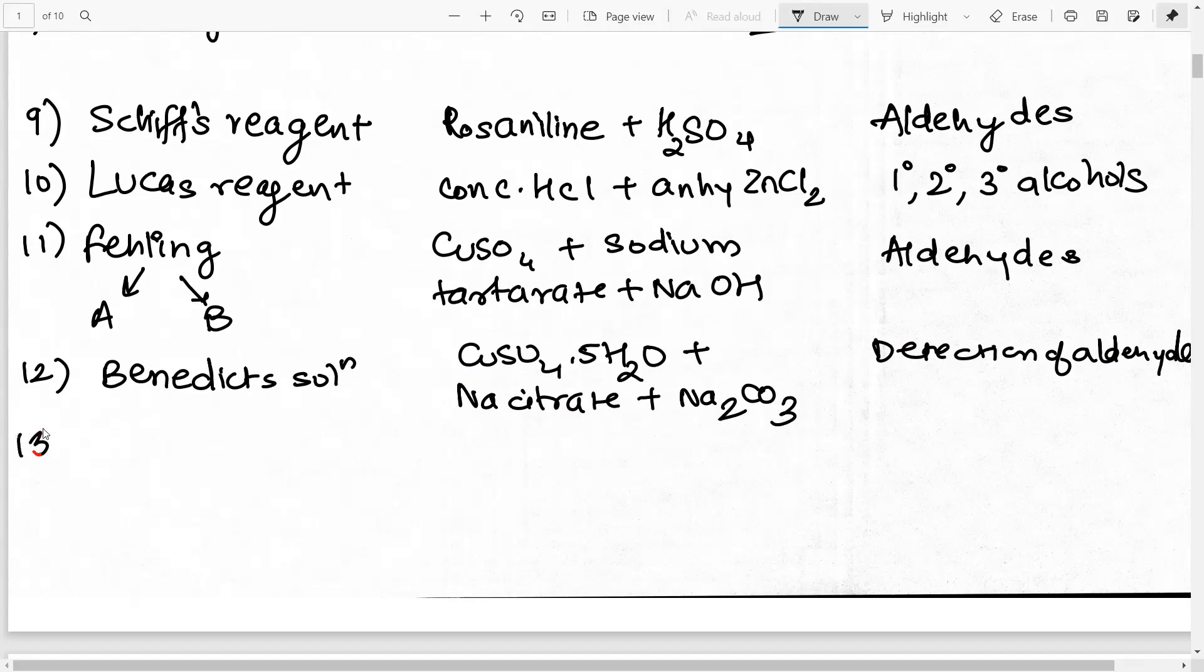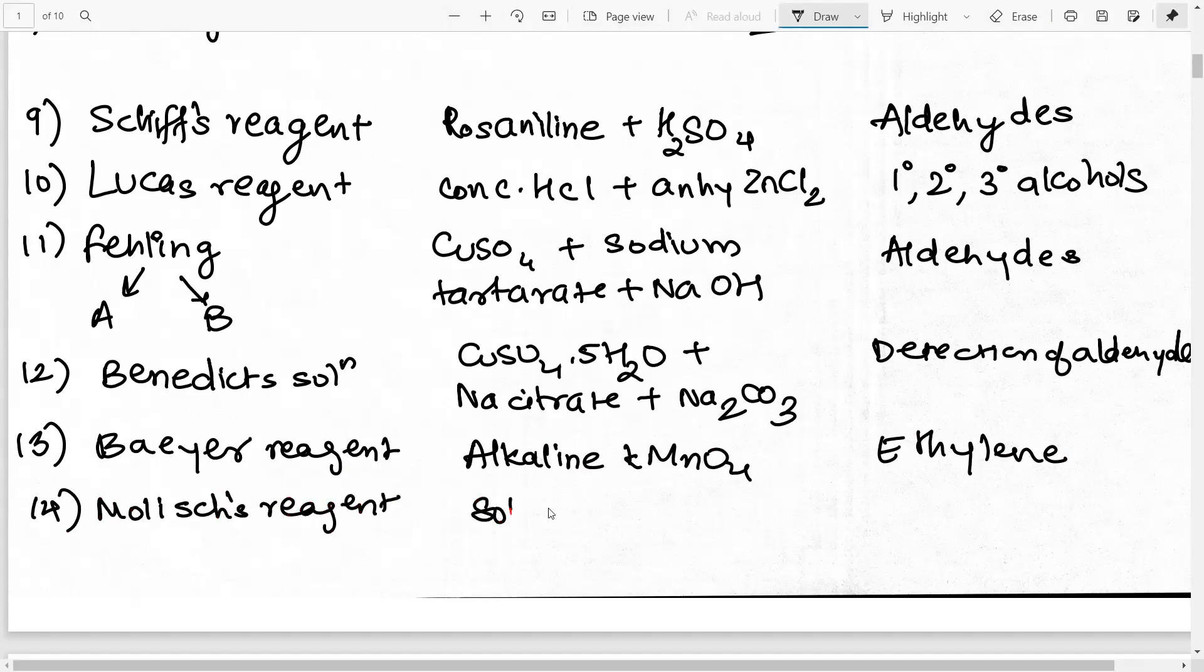Then you basically have Baeyer's reagent. Baeyer's reagent is a mixture of alkaline KMnO4 and it is basically used in detecting ethylene. So unsaturation. It is used for the detection of that thing. Then next you have something called as the oil gas. Now what is oil gas? Before that let us complete with the reagent sections only before I tell you what oil gas is. Another reagent that you have is Molisch reagent. So Molisch reagent is basically a solution of alpha-naphthol in ethanol. Alpha-naphthol in ethanol and it is used for the detection of carbohydrates. So carbohydrate detection can be done by using Molisch test.